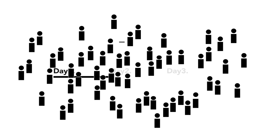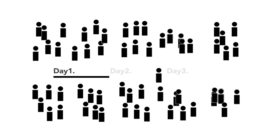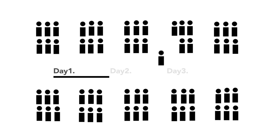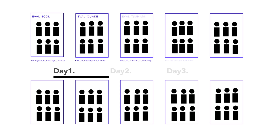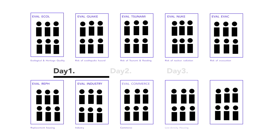On the first day of the SOMA workshop, the 60 participants were divided into 10 groups. Each group was assigned one of 10 major issues that would influence future designs for SOMA City. These issues included ecological impact, radiation risk, commercial attractiveness, and so on.